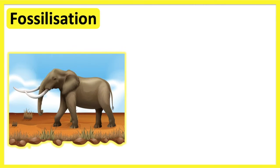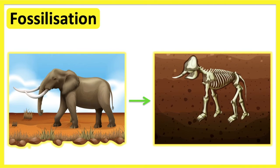So how are fossils formed? When an animal dies, the dead remains sink to the ground and slowly get covered in mud and sand.